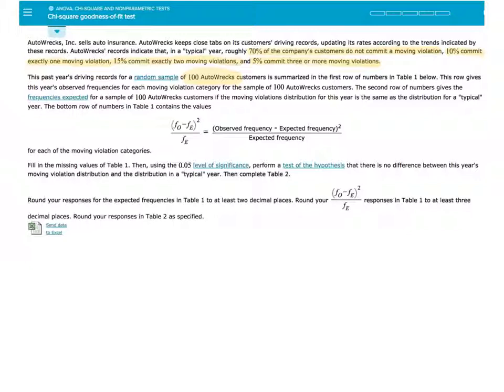This past year's driving records for a random sample of 100 Autorex customers is summarized in the first row of numbers in Table 1 below. This row gives this year's observed frequencies for each moving violation category for the sample of 100 Autorex customers. The second row gives the expected frequencies for a sample of 100 Autorex customers if the moving violations distribution for this year is the same as a typical year. The bottom row indicates the value (observed frequency minus expected frequency)² divided by expected frequency for each category.